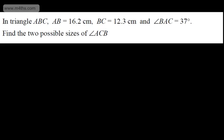In this video, we're going to look at the ambiguous case of the sine rule. The question says in triangle ABC, AB is equal to 16.2 centimeters, BC is equal to 12.3 centimeters, and angle BAC is equal to 37 degrees. We need to find the two possible sizes of angle ACB.